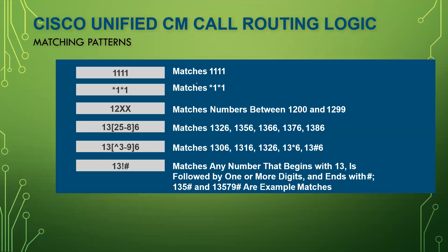Here are some matching pattern examples. If you make a pattern of 1111, it will exactly match 1111 only. If you make a pattern of *1*1, it will match exactly *1*1 — this is a star, not an X. If you create a pattern of 12XX, then 1 and 2 must be there, and for XX it can be any number between zero to nine.